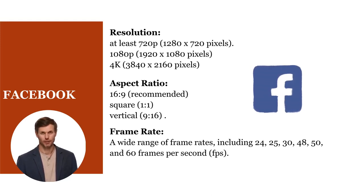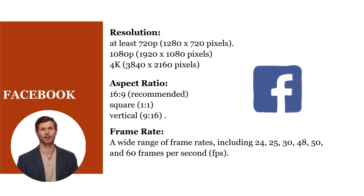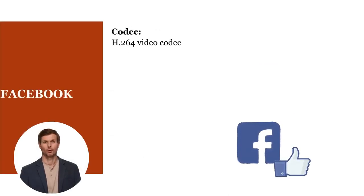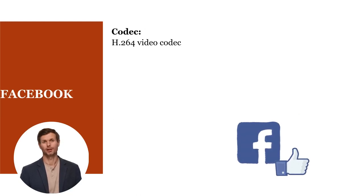As well as 48, 50, and 60 frames per second. For most content, 30 frames per second is sufficient. Facebook recommends using the H.264 video codec for optimal compatibility and performance. This codec provides good quality at relatively low bitrates.